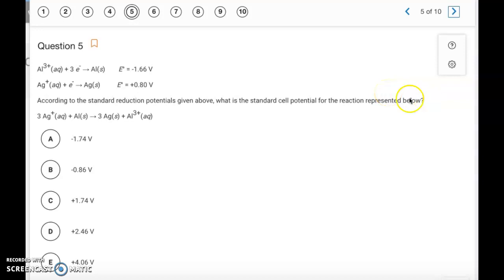Okay, according to the standard reduction potentials given above, what is the standard cell potential for the reaction below? So these are our two half reactions, and this is when we put the two together. We are flipping the aluminum reaction. We're keeping the silver reaction the same, but we're multiplying it by a coefficient of three. So when we flip the aluminum reaction, that's going to turn into a positive 1.66 volts. When you multiply it through by an integer, that doesn't affect the voltage, so that's going to stay at 0.8. So it's going to be 1.66 plus 0.8, so that's going to be a positive 2.46 volts, letter D.